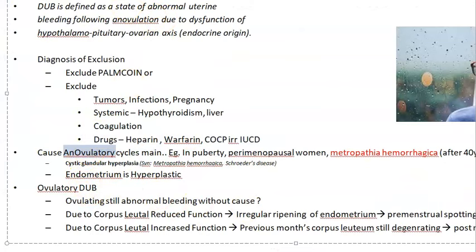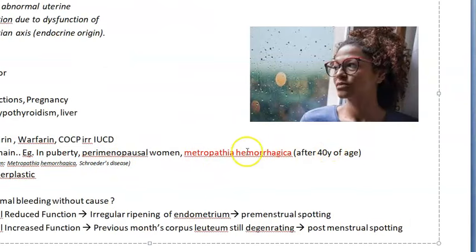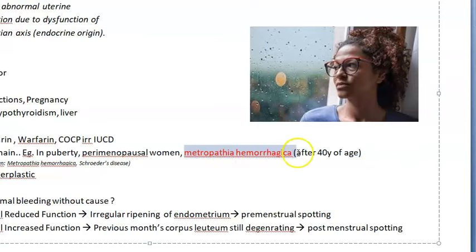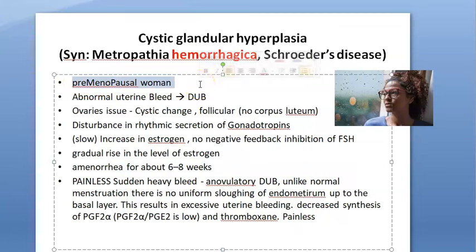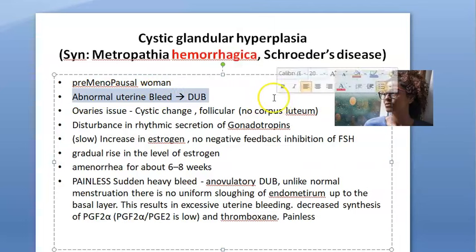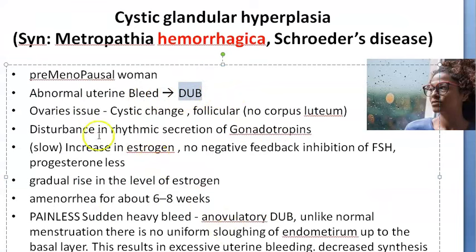This is a type of DUB where there is an anovulatory cycle — she will not be ovulating. Metropathia Hemorrhagica happens in women around premenopausal age, just before menopause, after 40 years of age. So she is not ovulating. To summarize: it is seen in premenopausal women, it is abnormal uterine bleeding, specifically anovulatory DUB. The ovaries will show cystic change — follicular, no corpus luteum — because there is no ovulation.